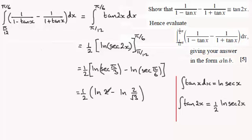And then picking up on the division rule here for logs, we've got half the natural log of 2 divided by 2 over root 3, which just gives us root 3. And there's your answer in the form a times the natural log of b.